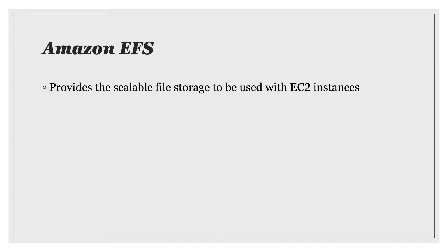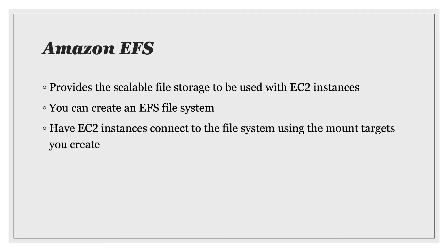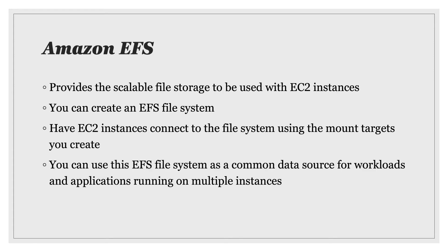Amazon EFS or Elastic File System provides scalable file storage to be used with EC2 instances. Scalable means it can be resized. You create the EFS file system and allow the instances to connect to it using mount targets. This EFS file system can act as a common data source for workloads and applications running on multiple instances. One important thing to keep in mind: EFS is not supported on Windows instances — it can only be used with Linux instances.